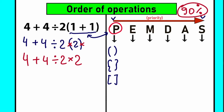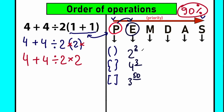After parentheses, we move to the next step: Exponent — the letter E in PEMDAS. Exponents are basic powers, for example 2 squared, 4 cubed, 3 to the power of 50, something like that. Let's find where we have any powers in our question. And to be honest, I don't see any — we don't have 4 squared or anything like that — so we can skip this step.